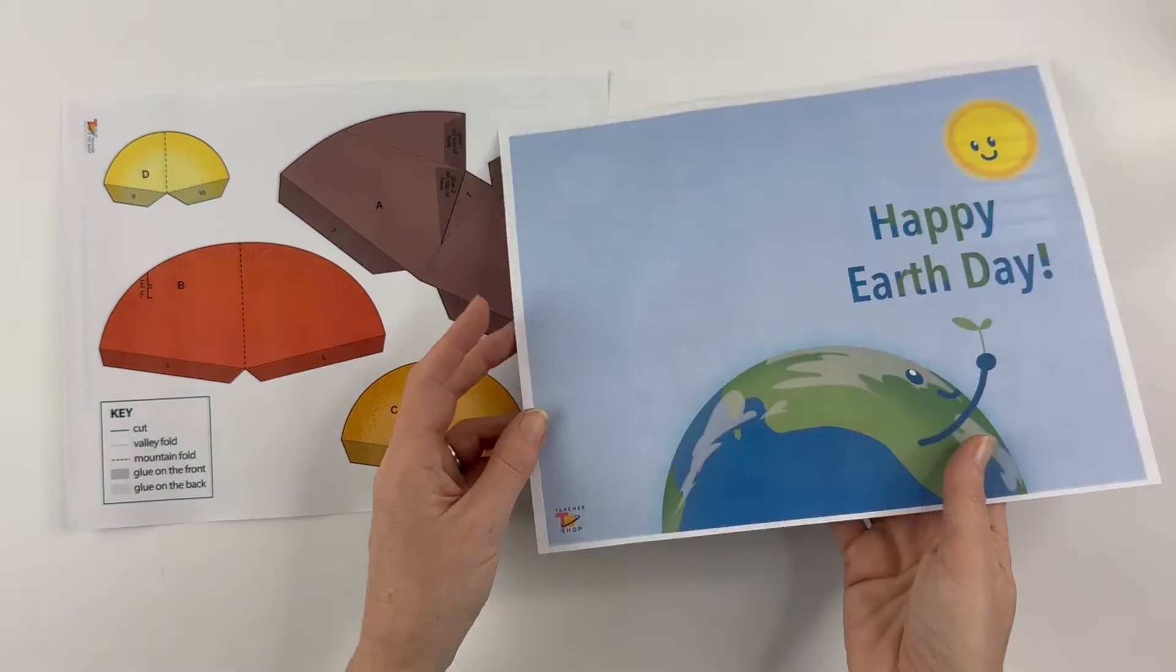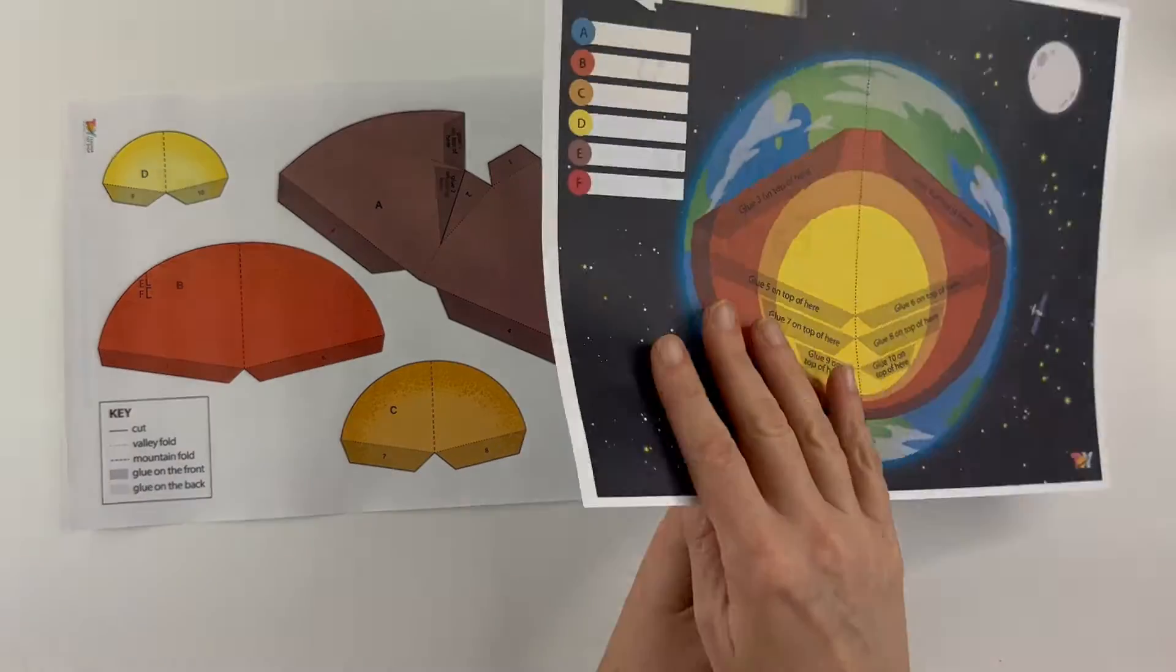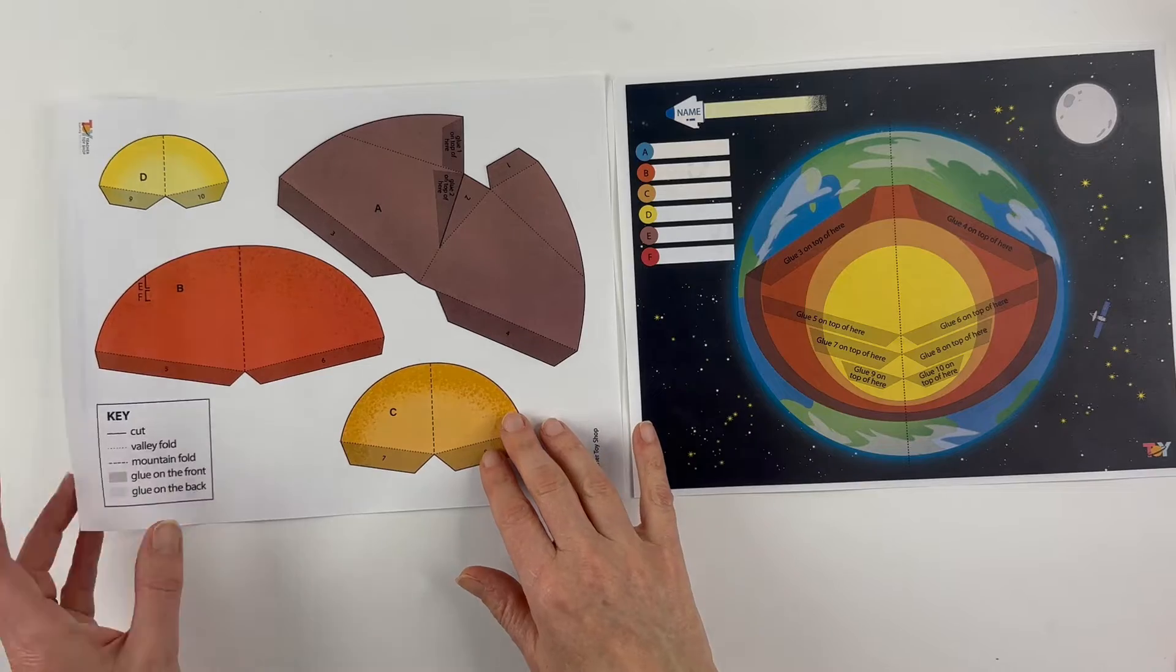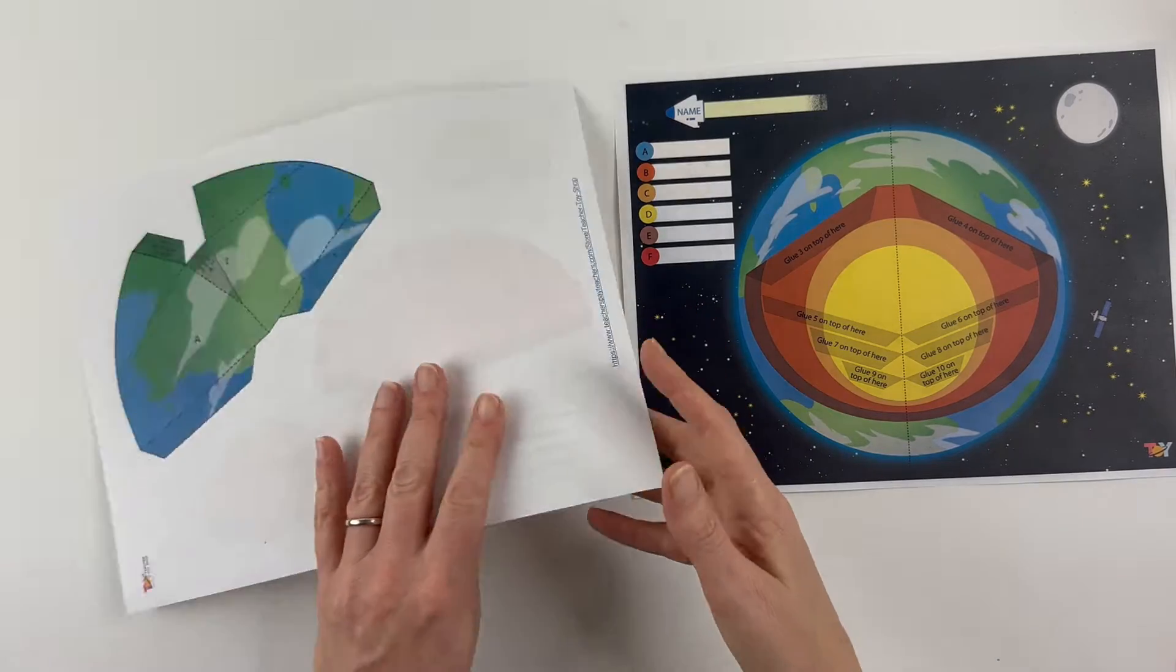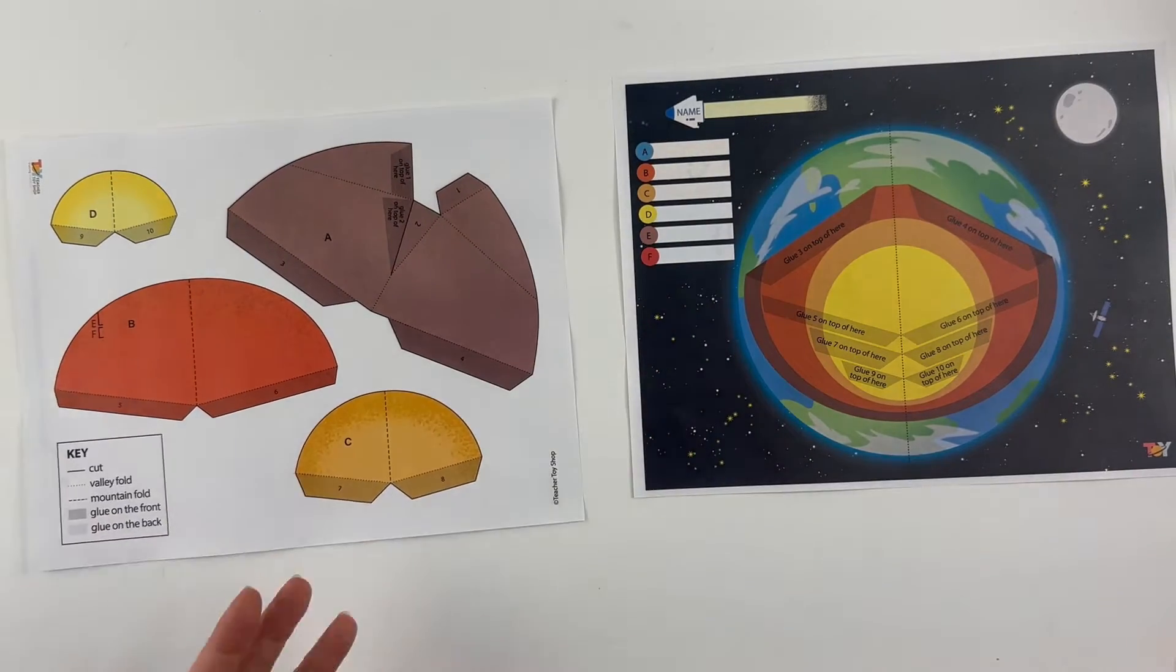And then it may be printed double-sided. If it's not and you want it to be, just glue these two pages back to back. And then this one again it should be printed double-sided, but if it's not, if this piece is separate, you'll need to glue that to the back of the brown sheet.